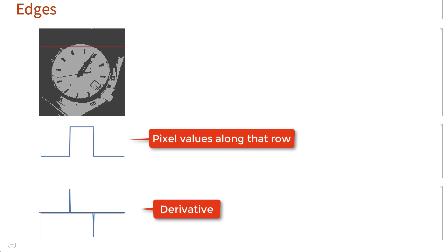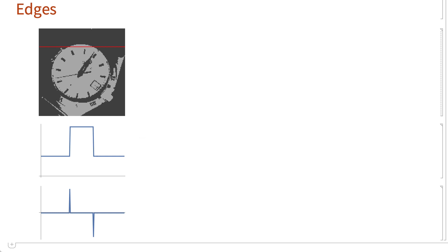In the first plot, the edges show up as sharp changes in pixel value, and in the derivative, the locations of the edges correspond to minima and maxima of the derivative. The magnitudes of those minima and maxima are also useful as a measure of the sharpness of the edge.